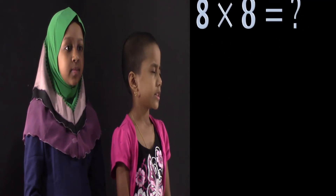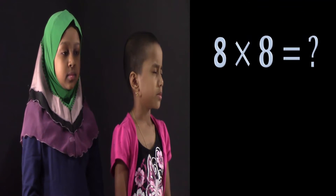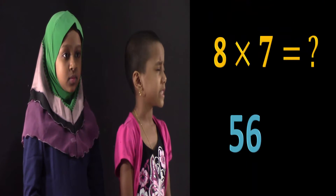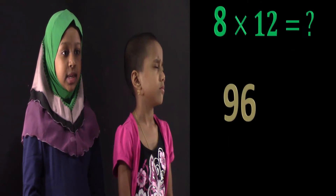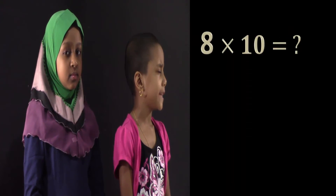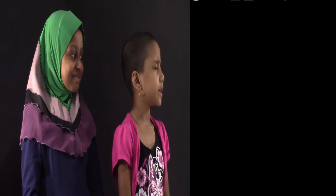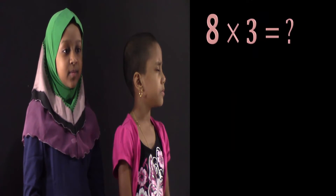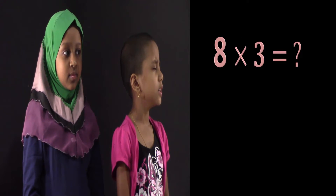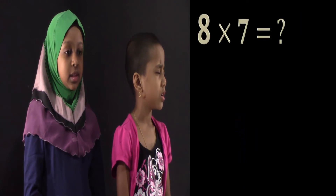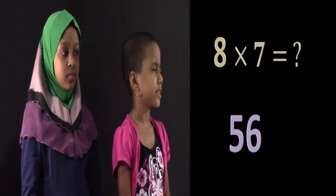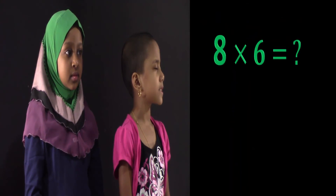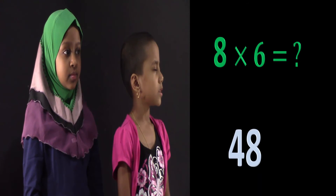What's 8x8? 8x8 is 64. What's 8x7? 8x7 is 56. What's 8x12? 8x12 is 96. What's 8x10? 8x10 is 80. What's 8x11? 8x11 is 88. What's 8x3? 8x3 is 24. What's 8x7? 8x7 is 56. What's 8x6? 8x6 is 48.